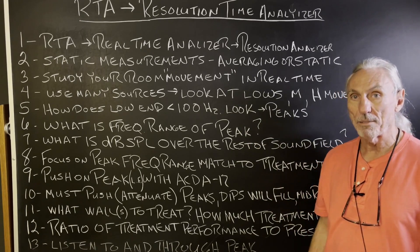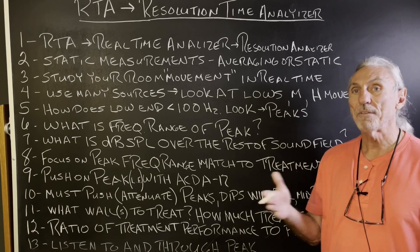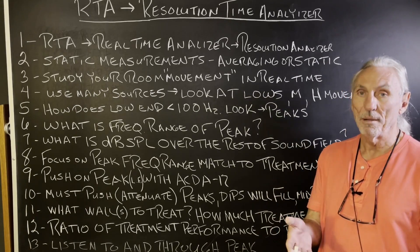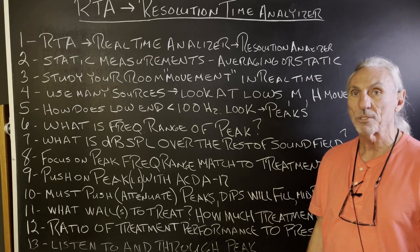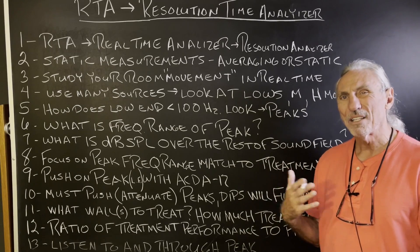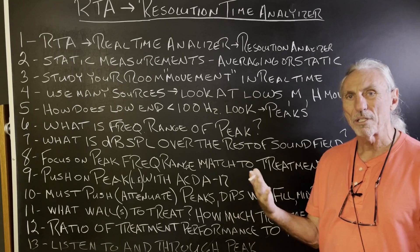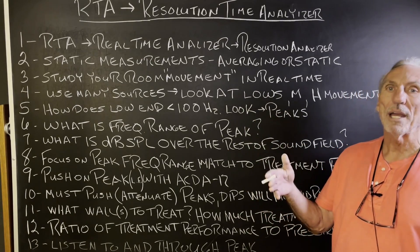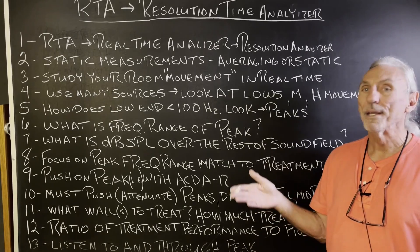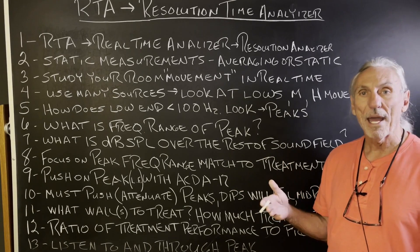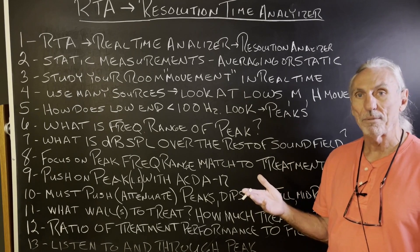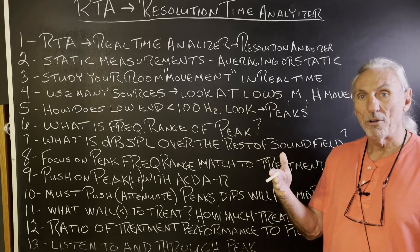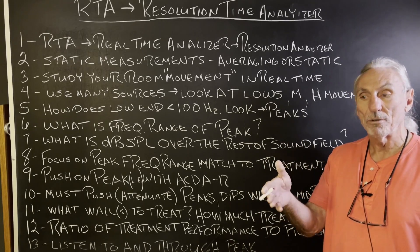Increase the gain 1 dB — see what happens. You don't have a feel for that from these kinds of measurements. You can't relate to it. You can't use it as a comparative base. If you study your room in real time, you can. How do you do that? Download an RTA app on your phone. There's tons of them in the Apple Store. Have it on your phone. Use the microphone in your phone.